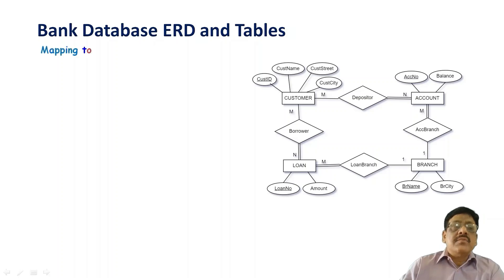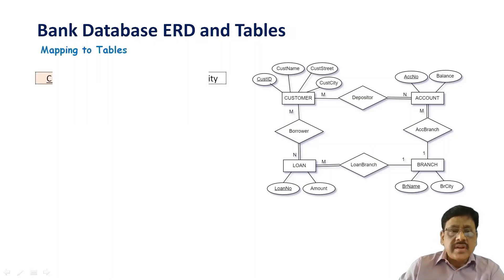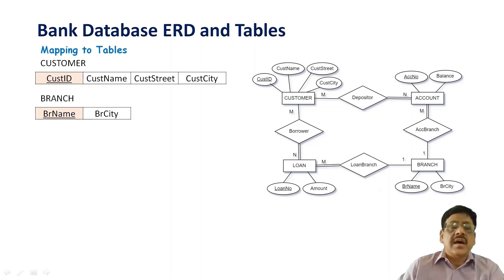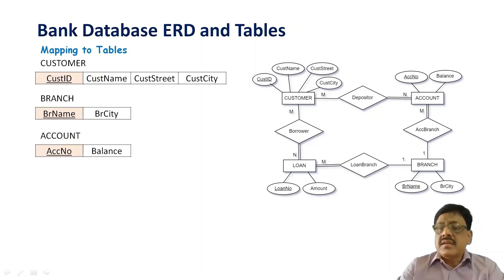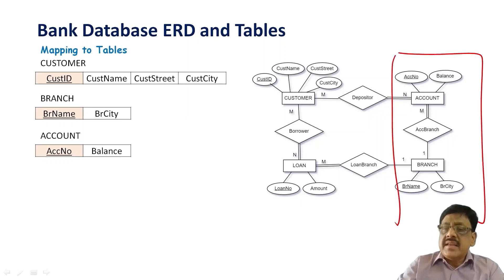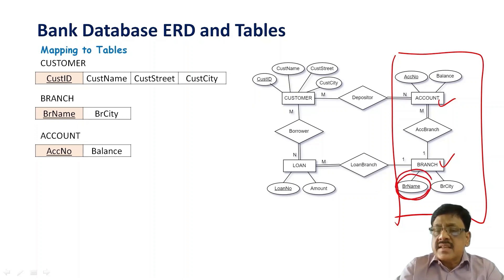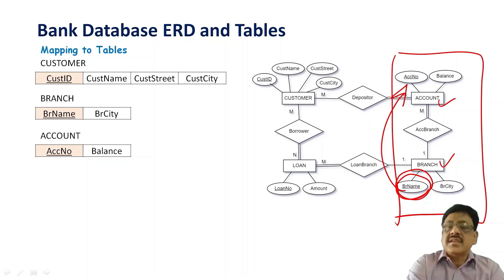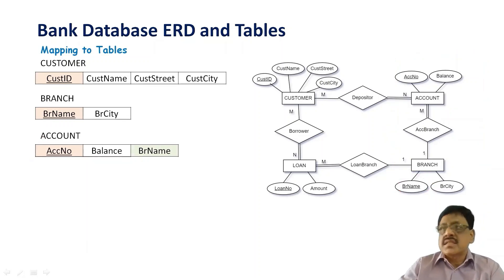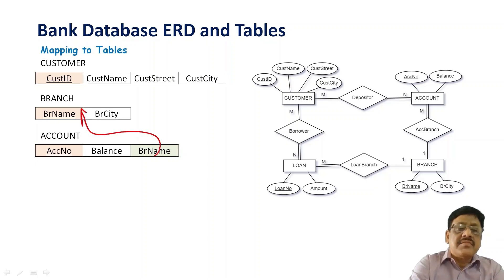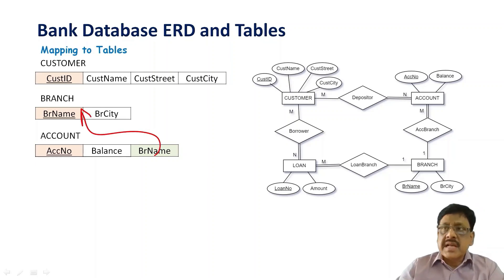Let us map to tables. There are four entity sets, so let us create four tables — one for customer, then account, and branch. This is a binary one-to-many type from branch to account. The rule says that while creating a table for account and branch, include the primary key of the one side — that is branch name — as a foreign key in the relation of the many side, which is account. We include branch name as a foreign key, and this foreign key must refer to the primary key branch name of the branch table.